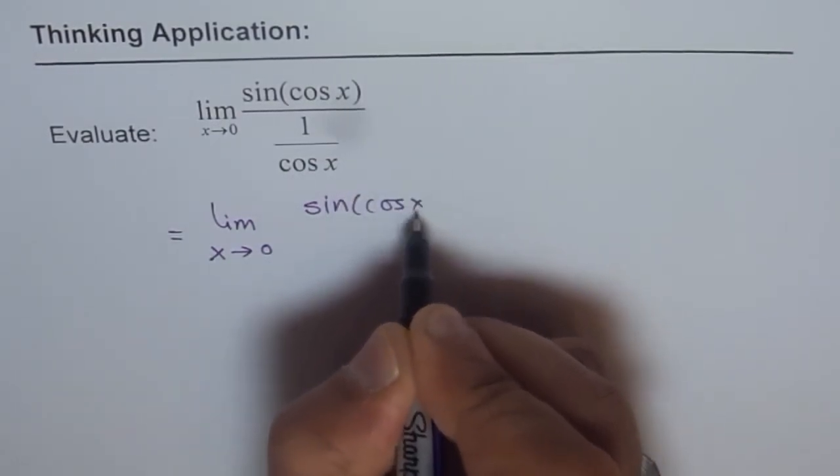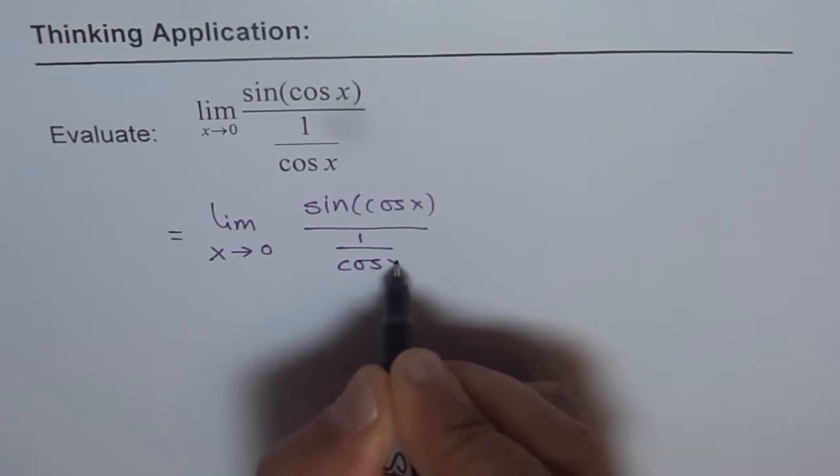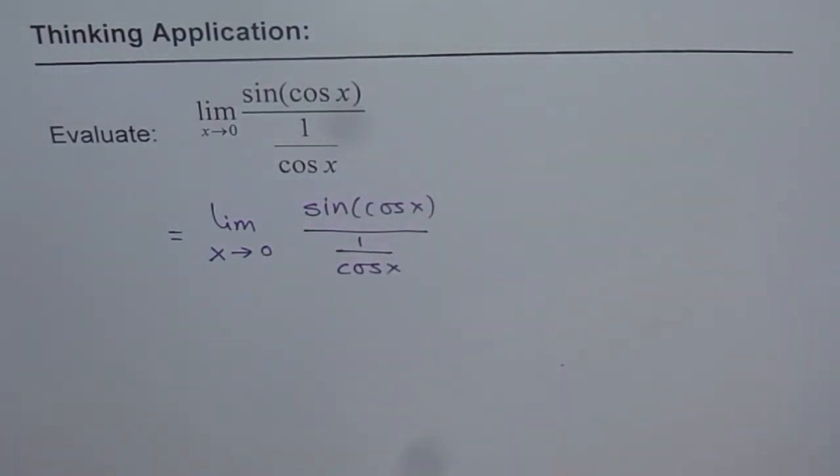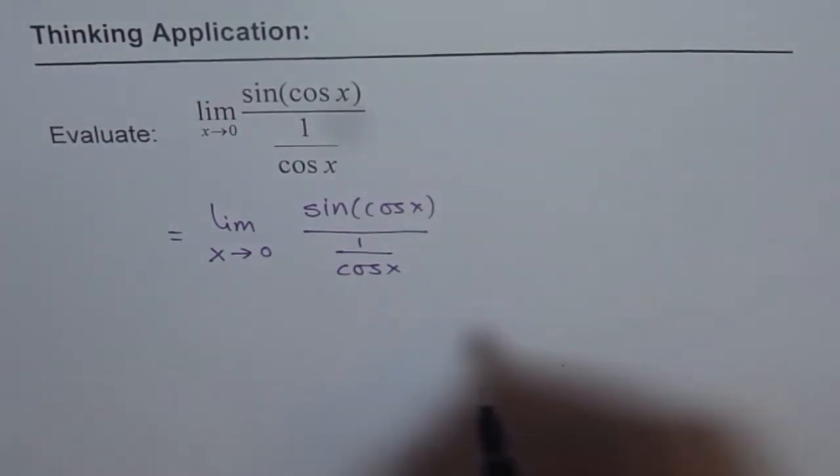Sine of cos x over 1 over cos x. Now what I am going to do here is I am writing 0 for cos x. Then what do we get?